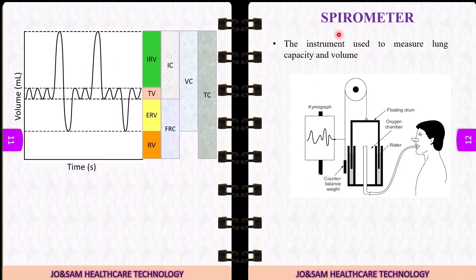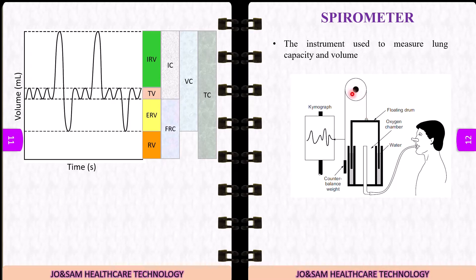A spirometer is the instrument used to measure lung capacity and volume. In the spirometer setup, the nose is closed. A floating drum is counterbalanced with a weight attached to a pen. This pen traces a graph on a kymograph. When we inspire and expire, we move the floating drum.